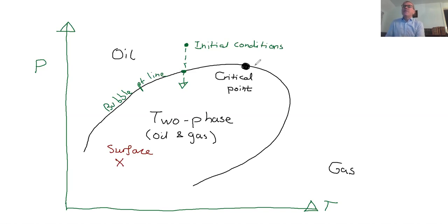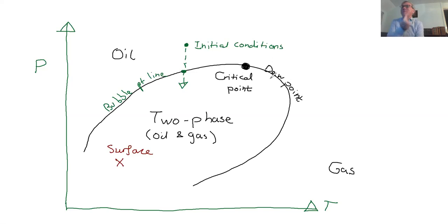On the other side of the critical point is what's called the dew point. The dew point is where, as I drop the pressure from a single gas phase, you see droplets of a denser phase appear. Those droplets sink in your PVT cell, confirming they are the oil phase. So this is the dew point, and you're essentially producing a field that is more gas-like.